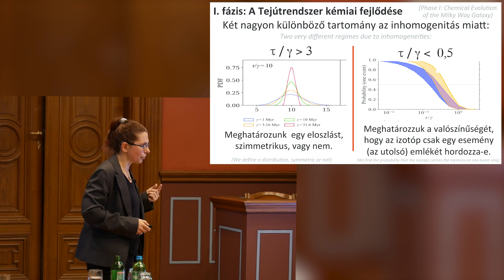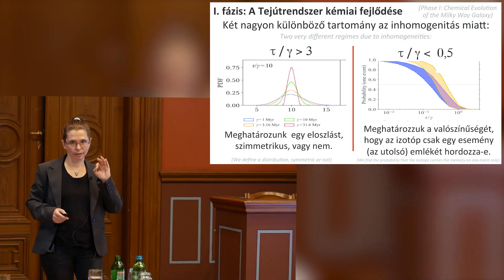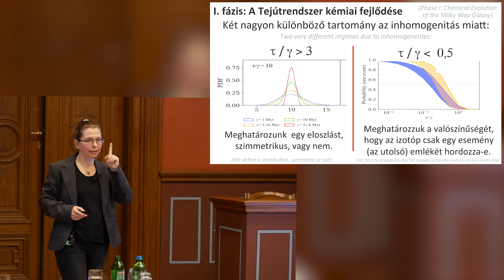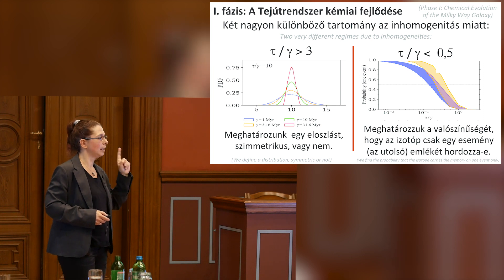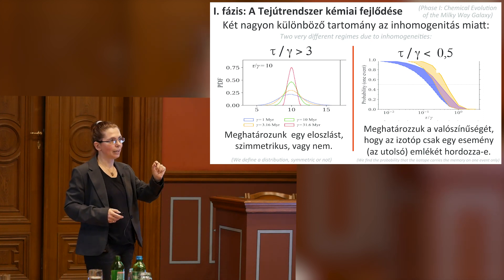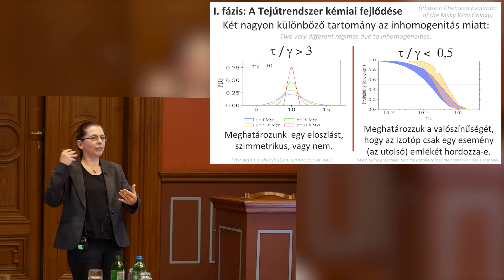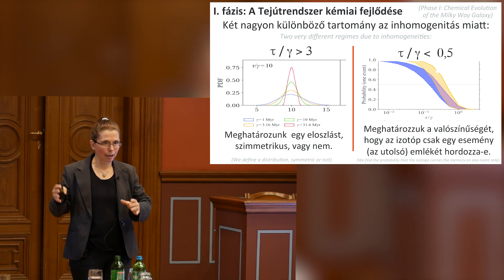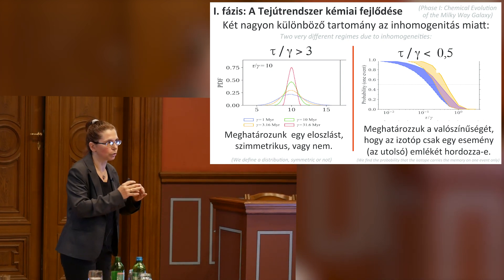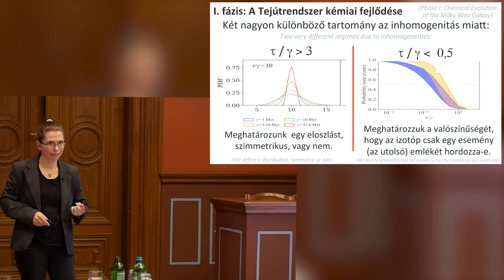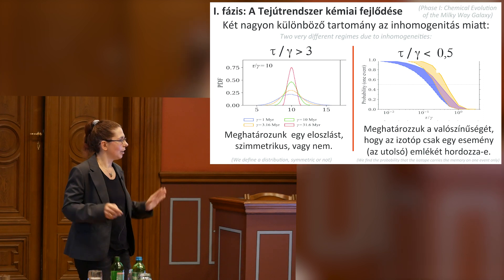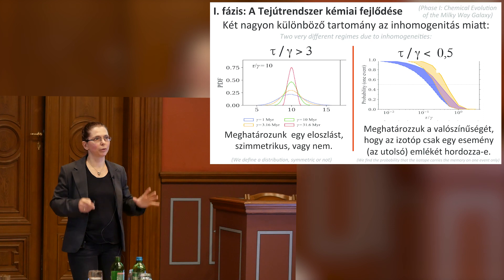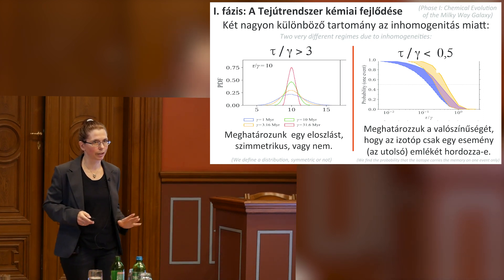The result depends on these two regimes. When I can build memory I get a distribution function with an average and error bar. When I can't, I had to invent something different: we decided to calculate the probability that the radioactive nucleus we see in the solar system comes from only one event — that it has memory of only one event. The shorter the mean life, the more likely it forgot everything that happened before. So if tau divided by gamma gets shorter, I'm basically seeing just one event. This is quite powerful.